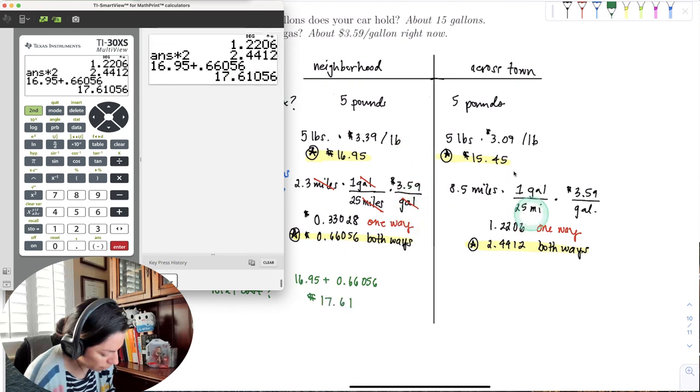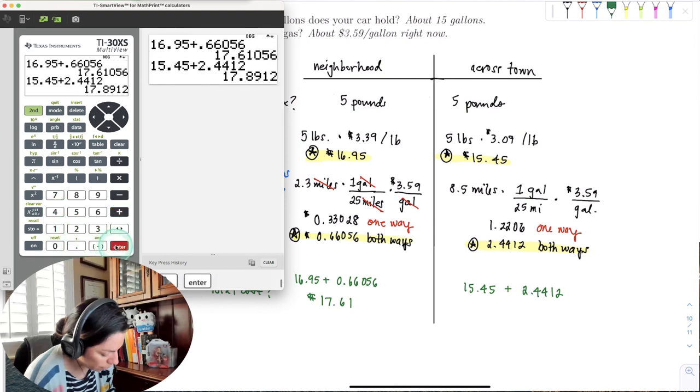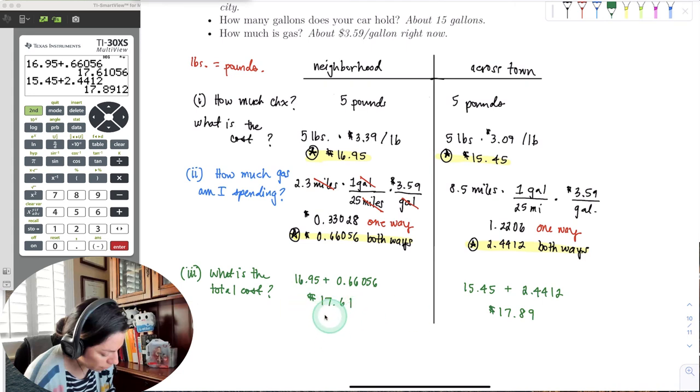So for across town, we'll have that total of $15.45 plus both ways for gas, $2.4412. Let's go ahead and add that. So $15.45 plus $2.4412. And we get, rounding to the nearest cent, again, that third digit is one, it's less than five, so it'll be $17.89.